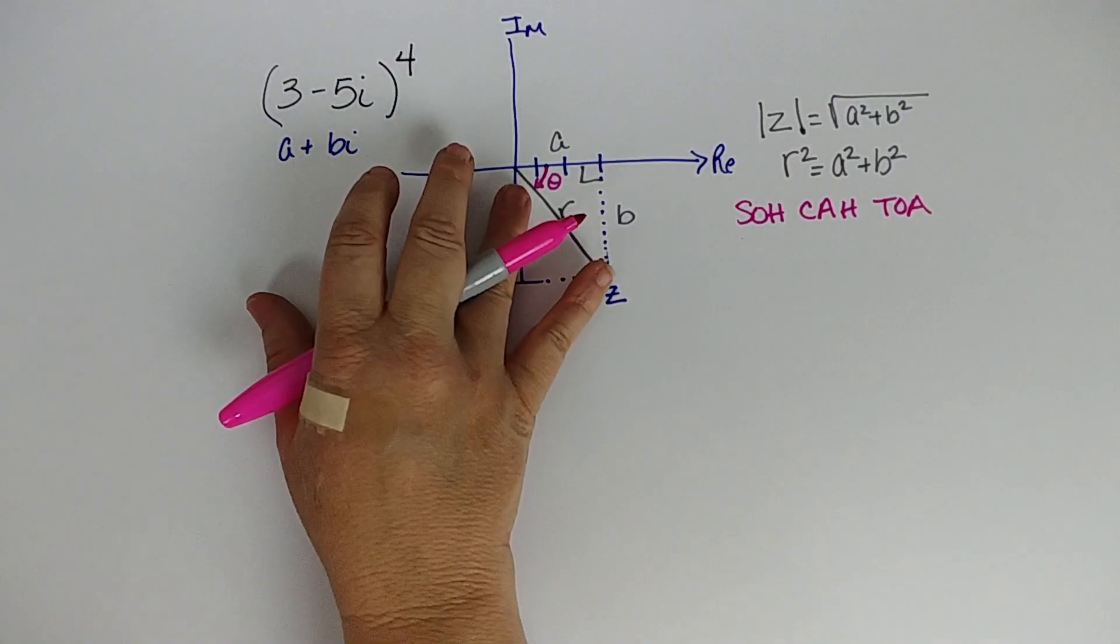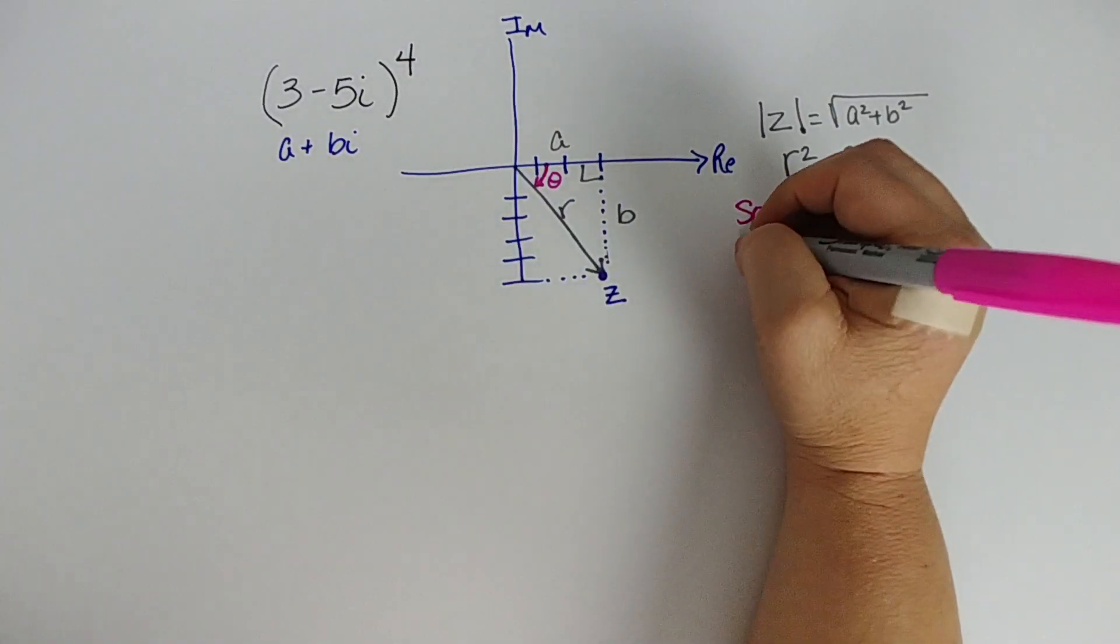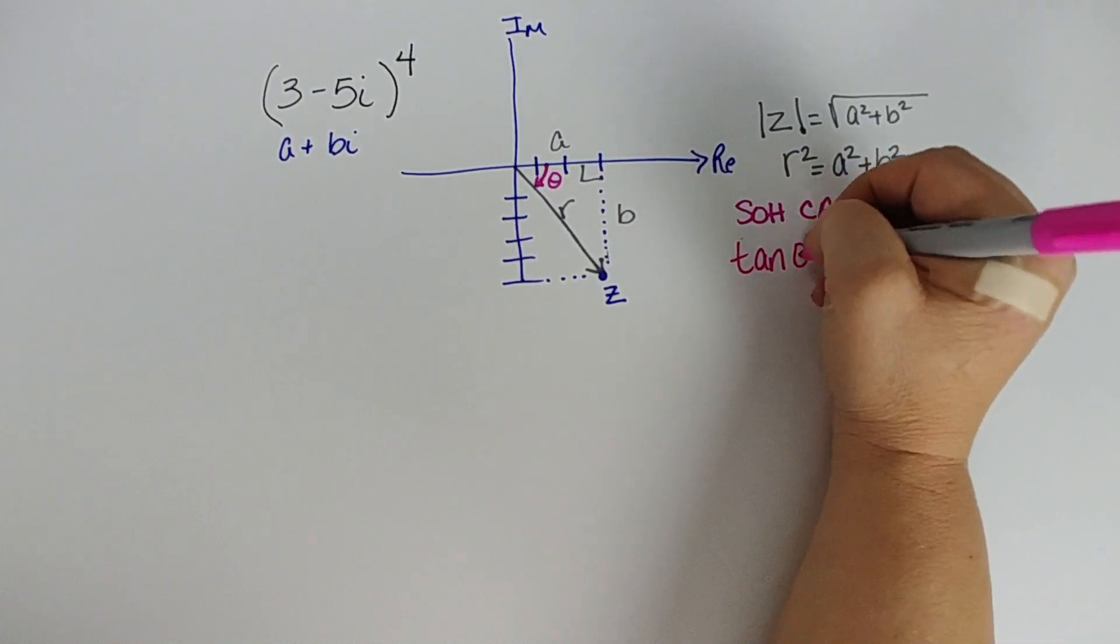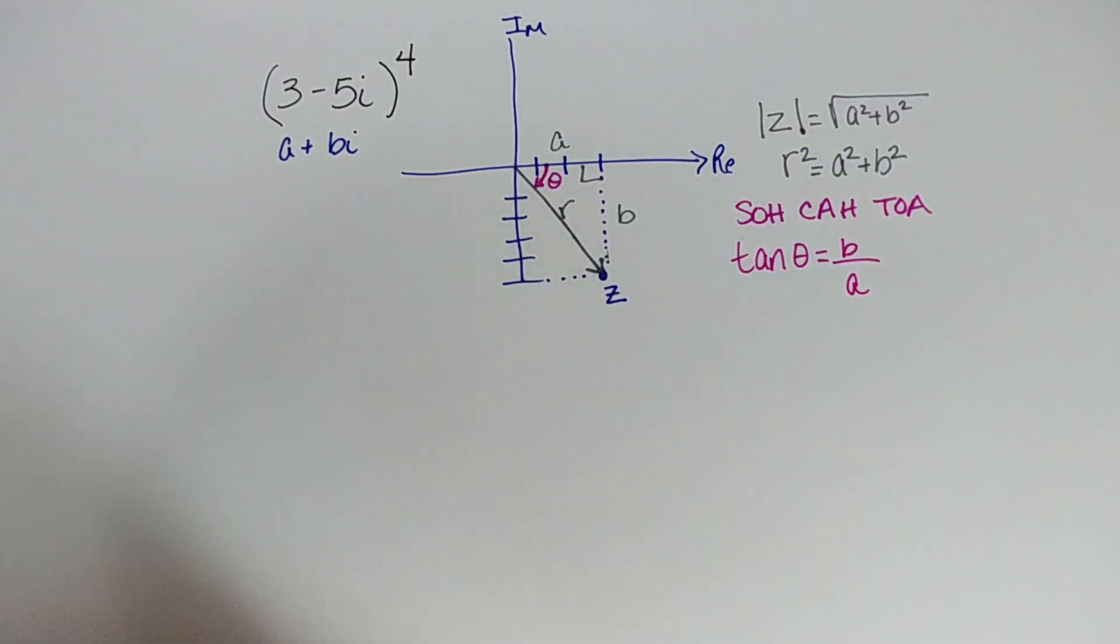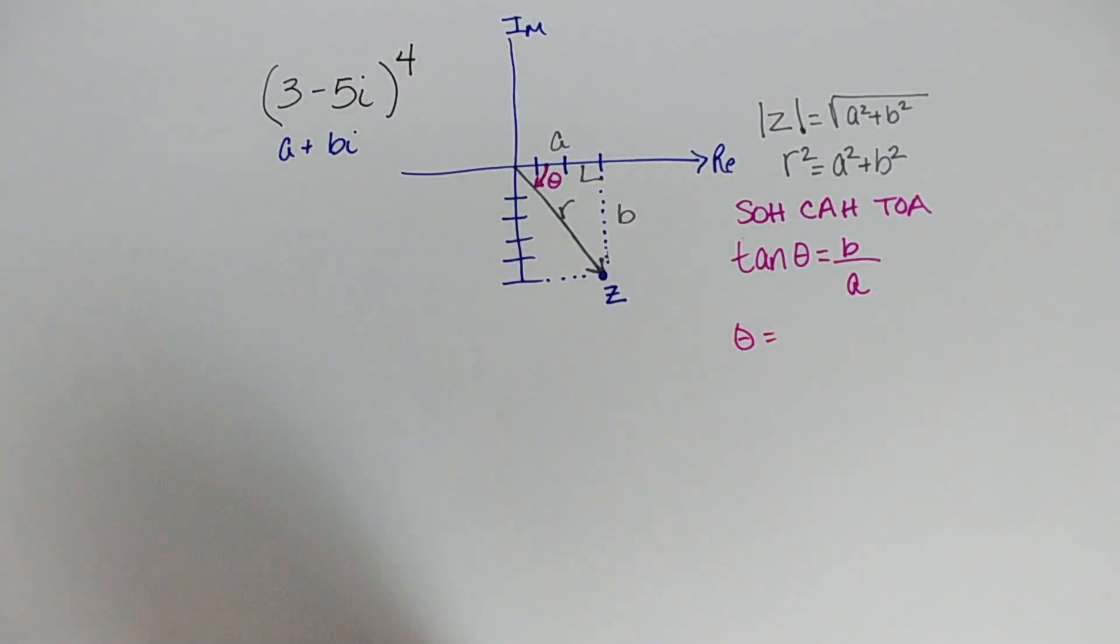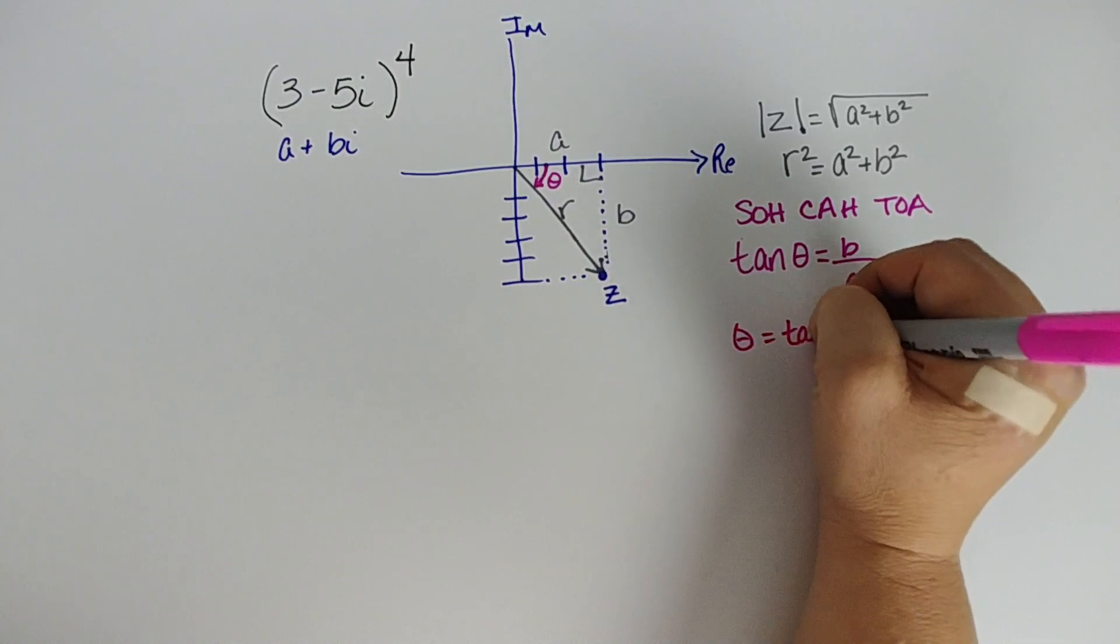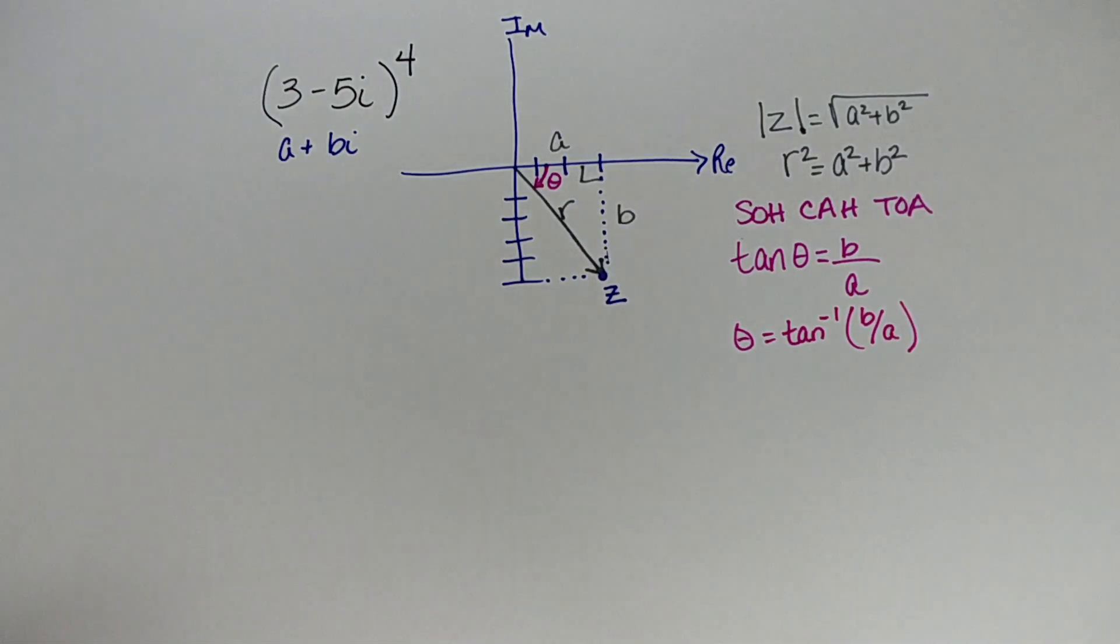We have this angle. We know we have the opposite and we have the adjacent. So which one of those deals with opposite and adjacent? That is tangent. So I know that the tangent of theta is going to be opposite, which is b, over adjacent, which is a. I can even take it one step further. I know that when I solve for angles, I use inverse tangent or arc tangent. So theta is going to be the inverse or arc tangent b over a.